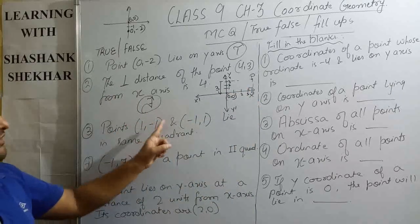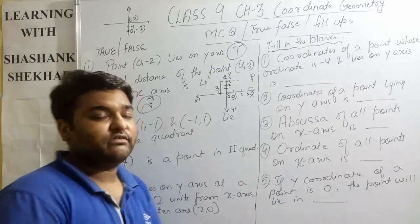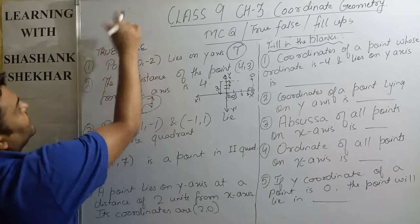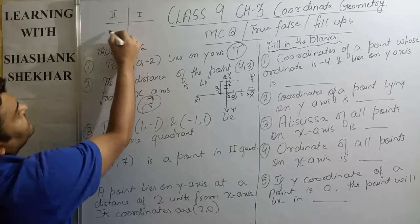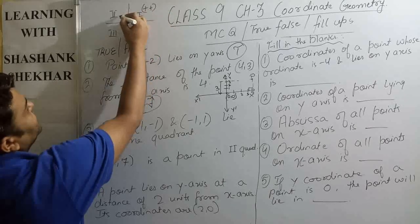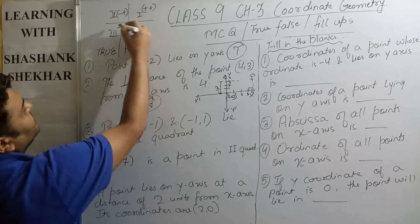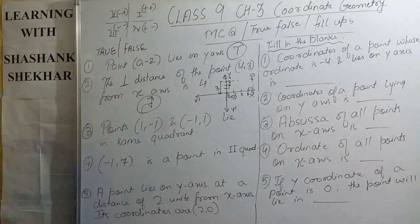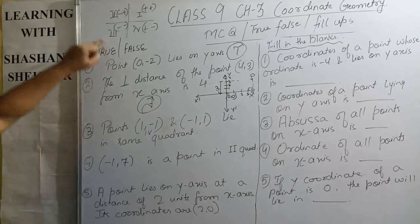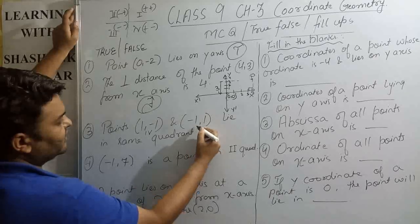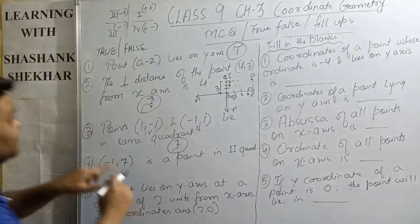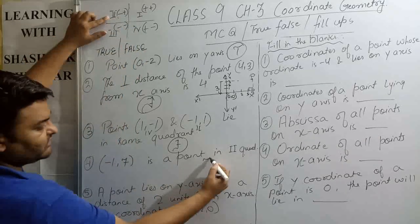True/False question three: points (1, -1) and (-1, 1) lie in the same quadrant. Point (1, -1) is plus-minus, so it lies in the fourth quadrant. Point (-1, 1) is minus-plus, so it lies in the second quadrant. They are in different quadrants, so this is False. Question four: (-1, 7) is a point in the second quadrant. Since x is minus and y is plus, it lies in the second quadrant — this is True.